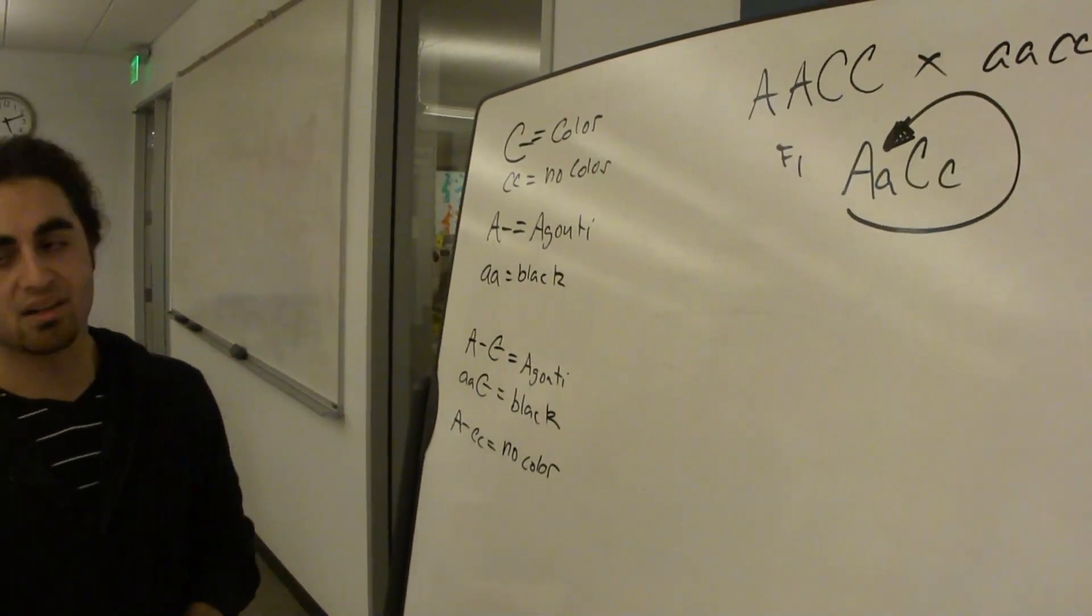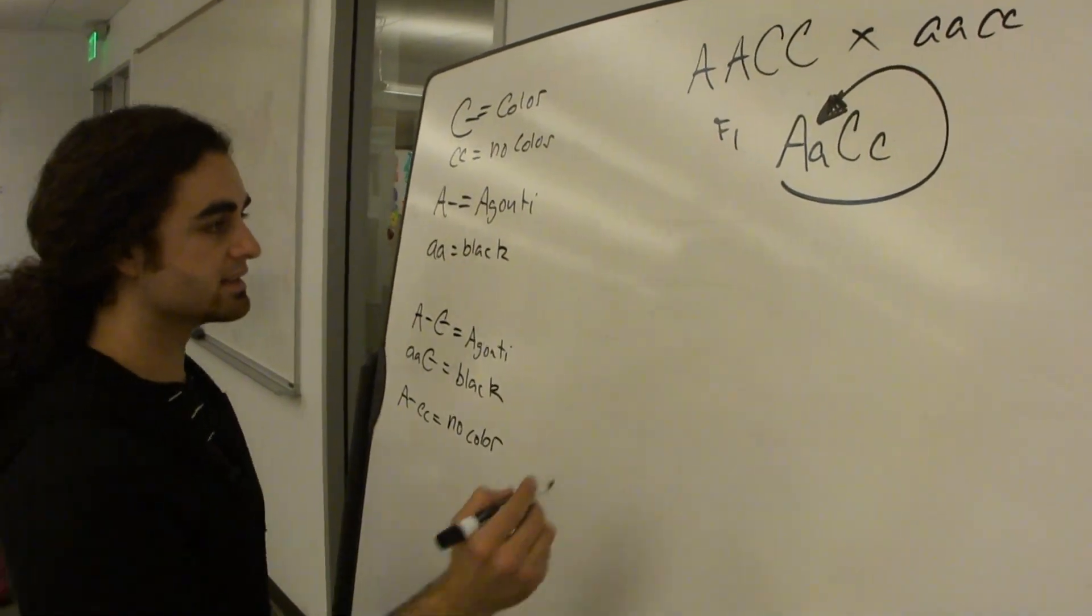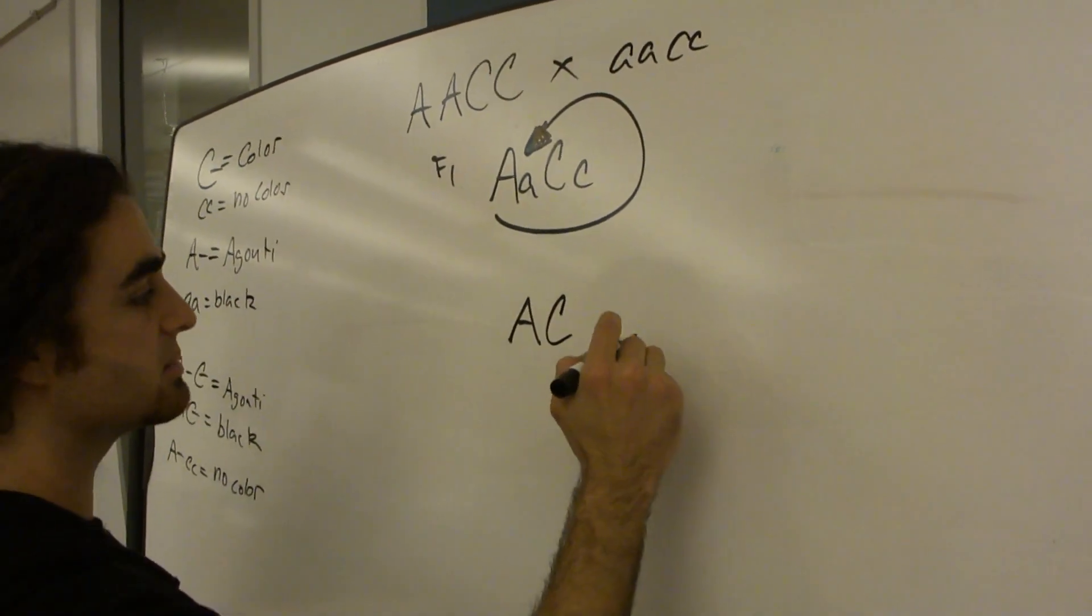And this is when we do our classic dihybrid cross. So we're going to get 16 cells. So we're going to do all of our possible gametes here.